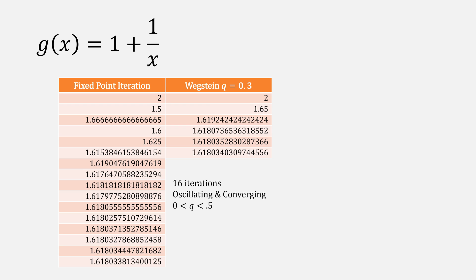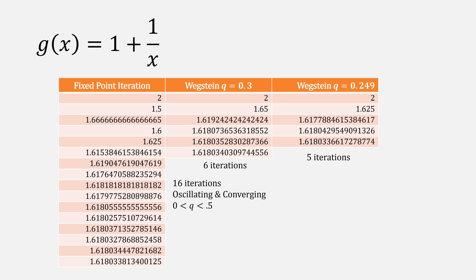In Wegstein's method, if q is 0.3, it only takes 6 iterations to converge, a speed-up of 10 iterations, and if we chose q of 0.249, it takes 5 iterations.